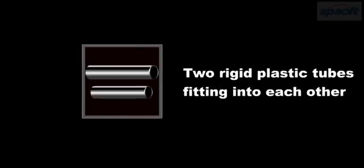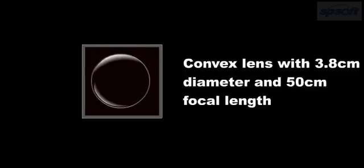Materials required are two cardboard or plastic tubes fitting in each other, one convex lens of 3.8 cm diameter and 50 cm focal length, and one concave lens of 2.5 cm diameter and 5 cm focal length.